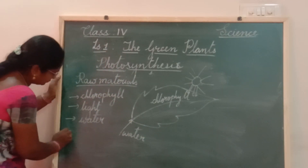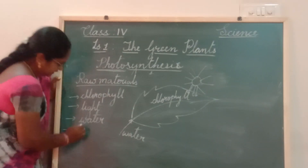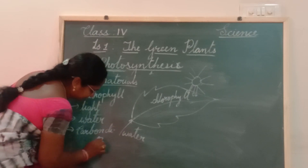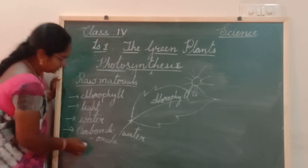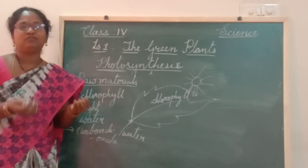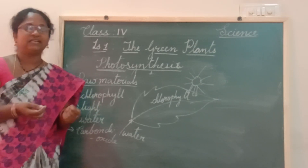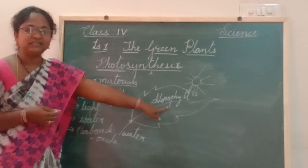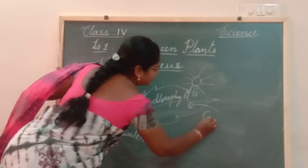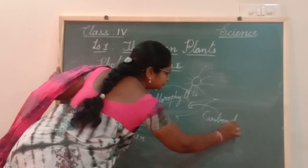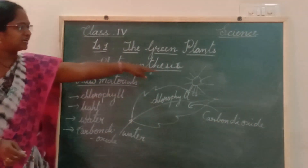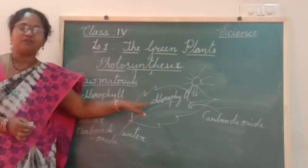The last and most important material is carbon dioxide. Where does the plant get carbon dioxide? Carbon dioxide is present in the air. We all breathe in oxygen and breathe out carbon dioxide, and that carbon dioxide is taken by the leaf to prepare the food. So it gets carbon dioxide from the air. These are the raw materials required for photosynthesis.